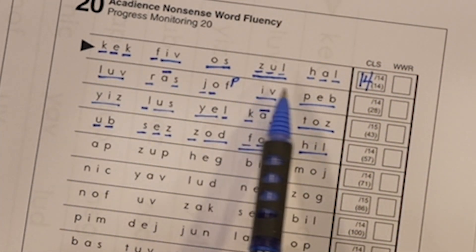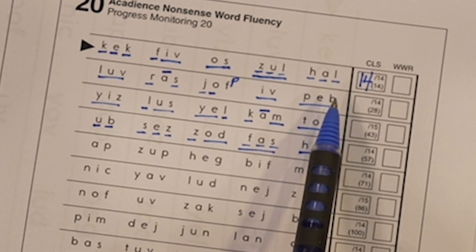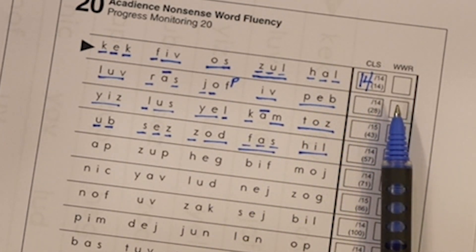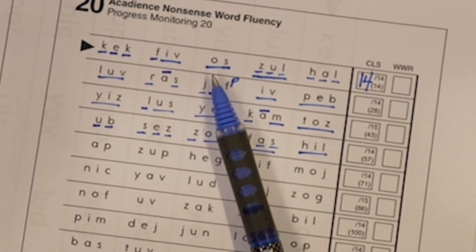Then I look for the whole words read. Now this is very important. You can only give credit to a whole word read if it is read as a whole word the first time.